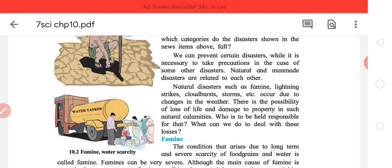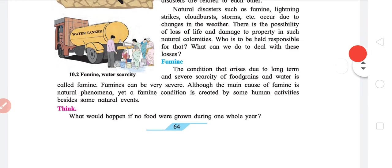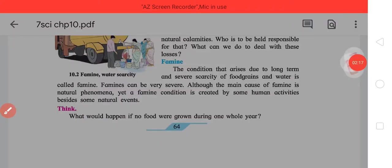First we come to famine. How to define it? The condition that arises due to long term and severe scarcity of food grains and water is called famine. So basically what is famine? There is no food.